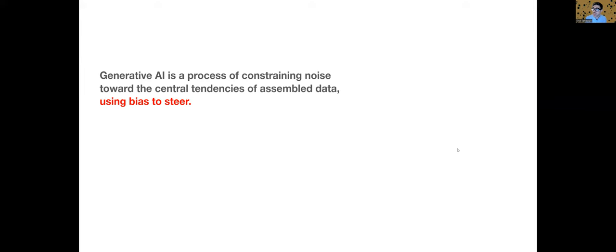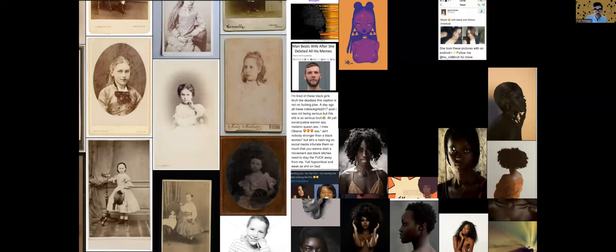And we use bias to steer. In the data set, to the left, we see an example of training data used for the term girl. Images of girl are to the left side. Images of black girl are to the right. Let's look at girl first, because this is a sampling. But I can tell you that many, many pages of the training data are these Victorian-era portraits of very young girls, the majority of whom are white. In the training data, girls means white girls.